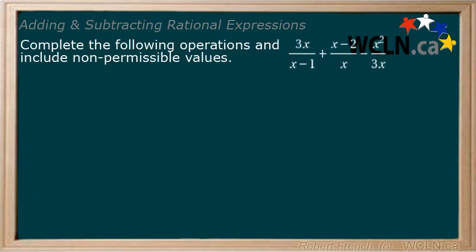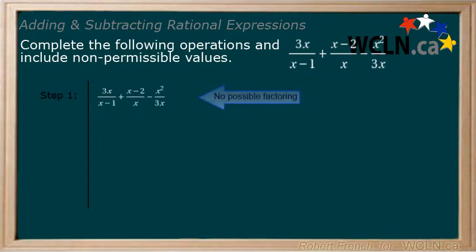Complete the following operations. Include non-permissible values with your answer. Step 1. We see that no factoring can occur so we move on to step 2. From the expressions we have non-permissible values of 1 and 0.